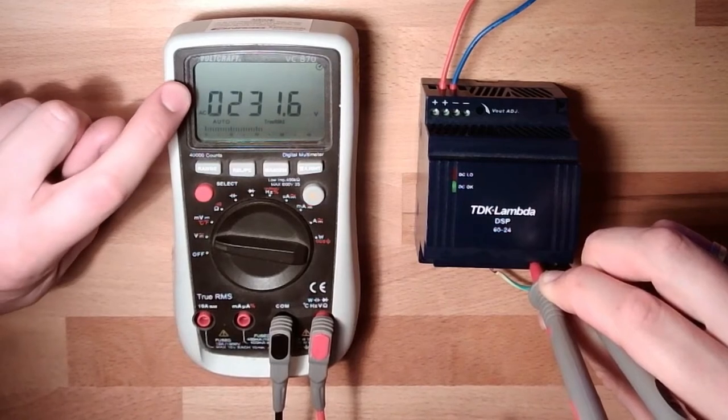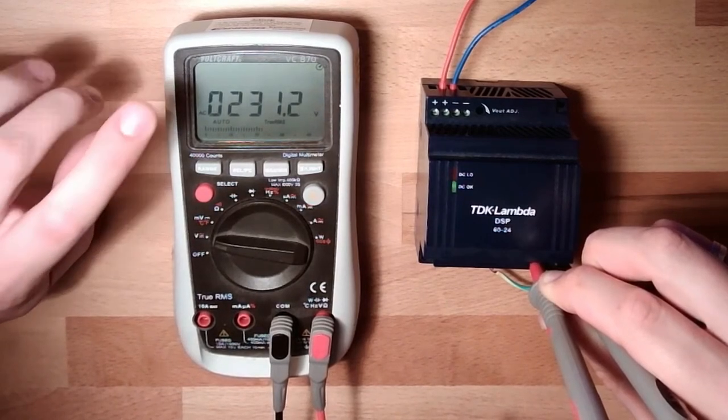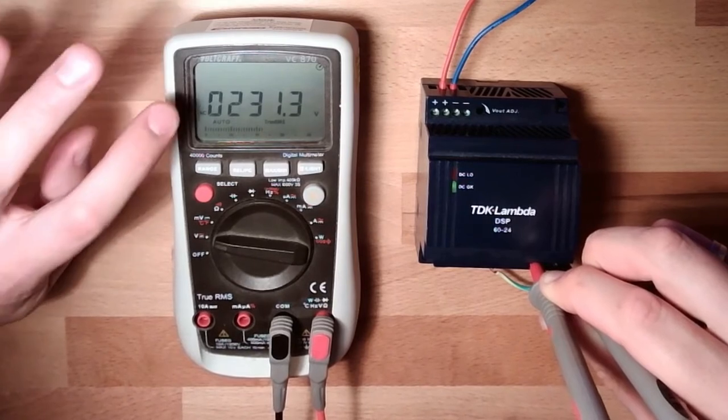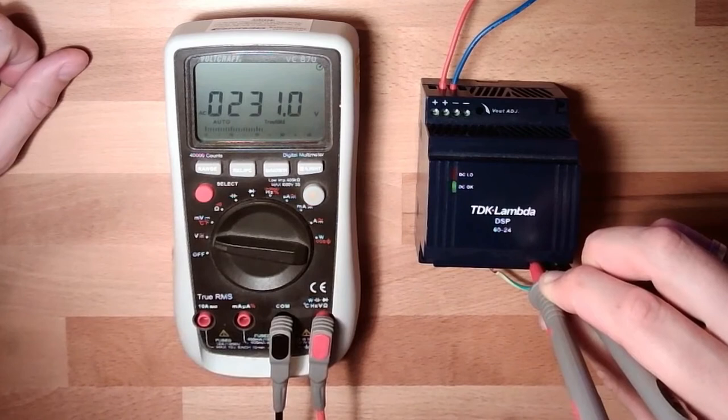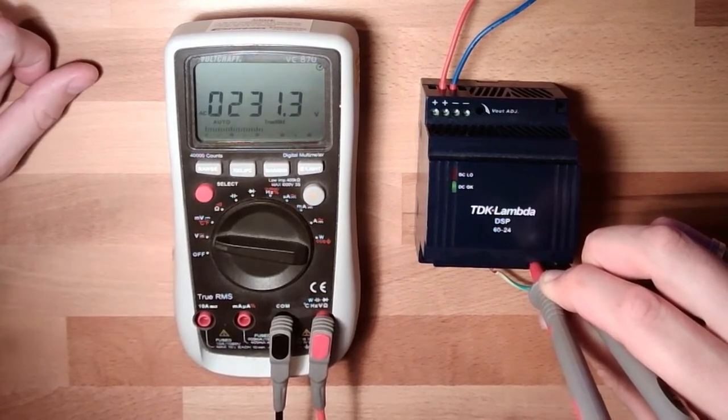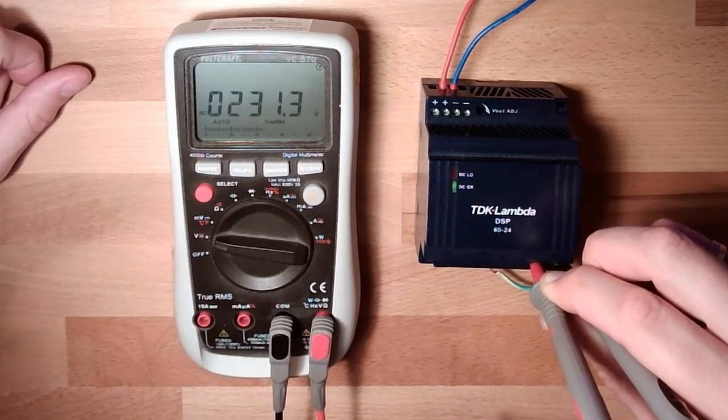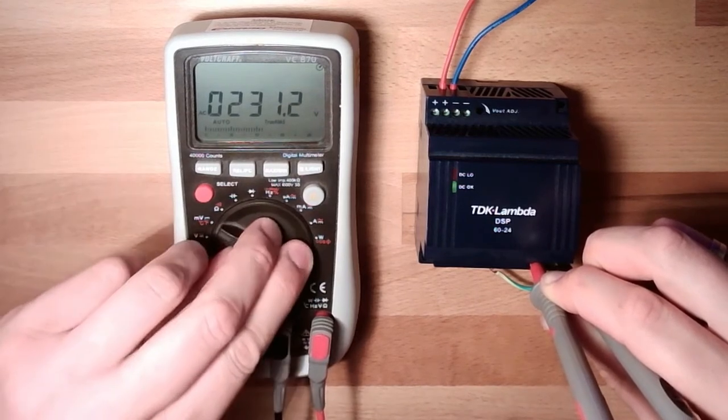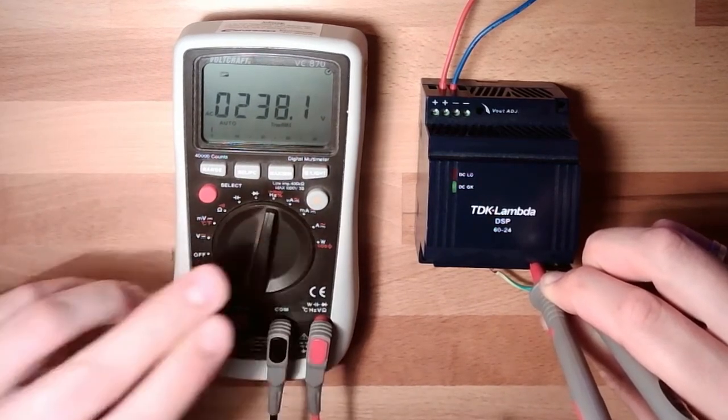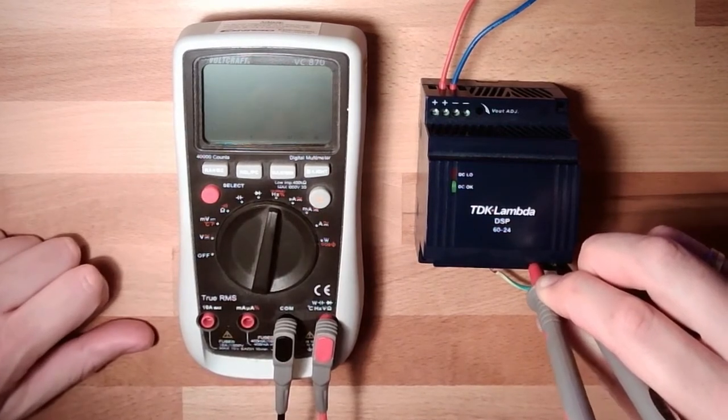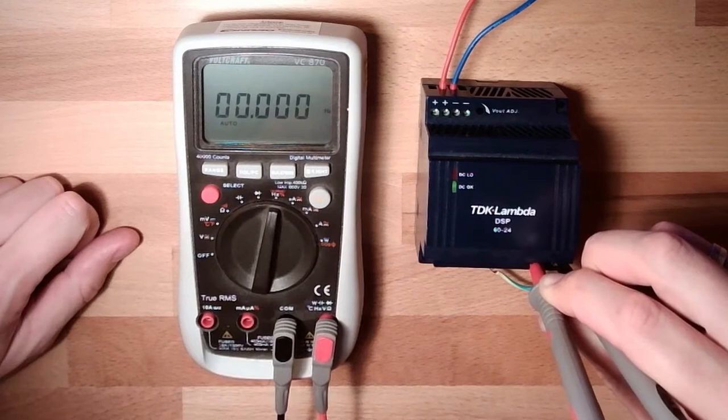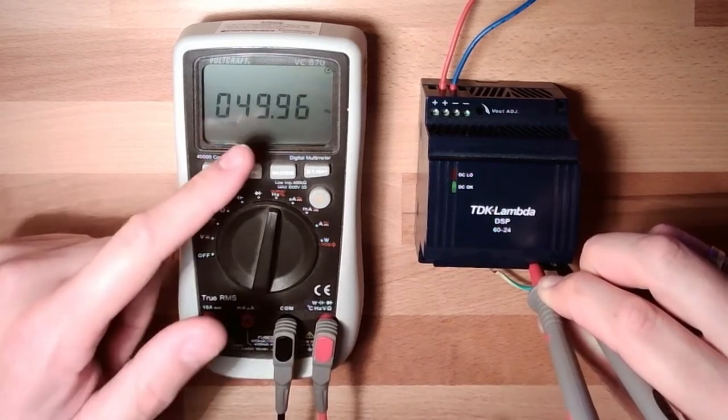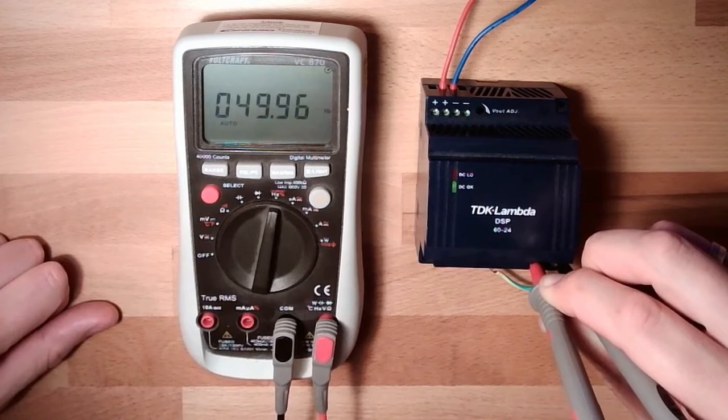Or two volts. Now I change to AC. There's even warning blinking. This means, hey, you're touching a potential deadly source. And we see we have 231 point something volts. So 230 volts. And we can even select hertz. Now the battery is tired. 50 hertz. Working pretty good.